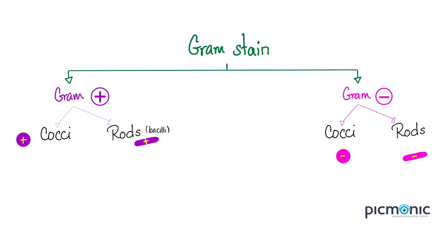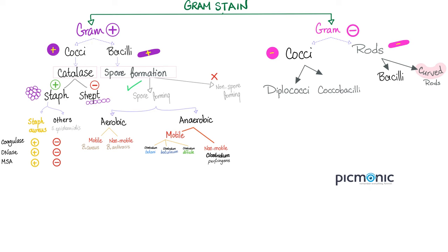We can divide bacteria into gram-positive and gram-negative using the gram stain. If you appear purple, you're gram-positive; if you appear pink, you're gram-negative. Each is subdivided into cocci, which are spherical in shape, and rods. Since today we're talking about anatomically gram-negative bacteria, let's classify the gram negatives: cocci and rods. The cocci could be diplococci — a double coccus — or coccobacillus, which is oval-shaped, between a coccus and a bacillus.